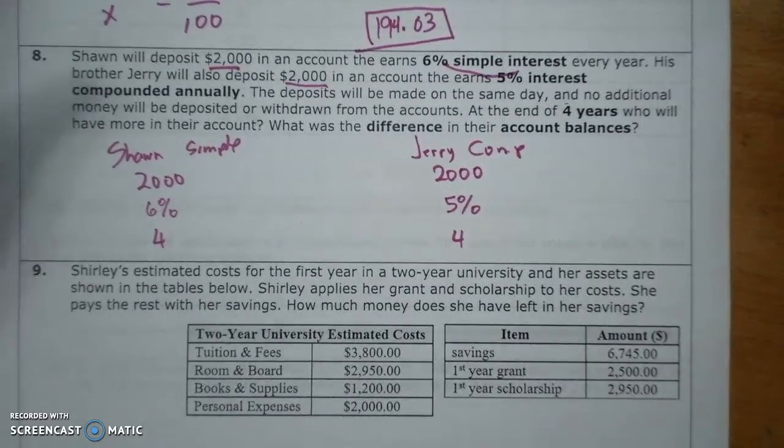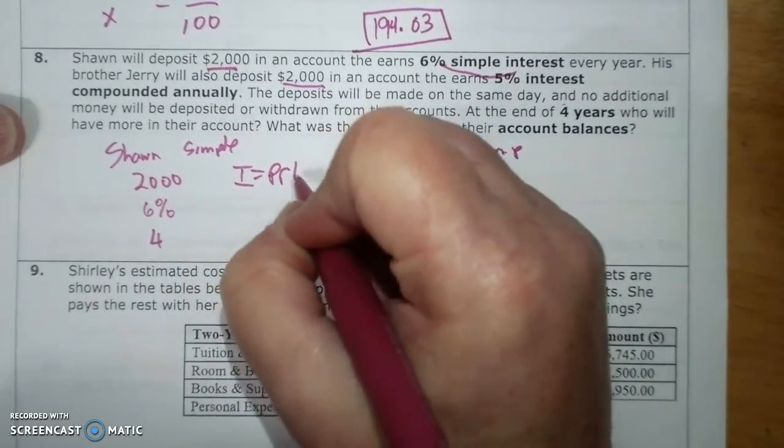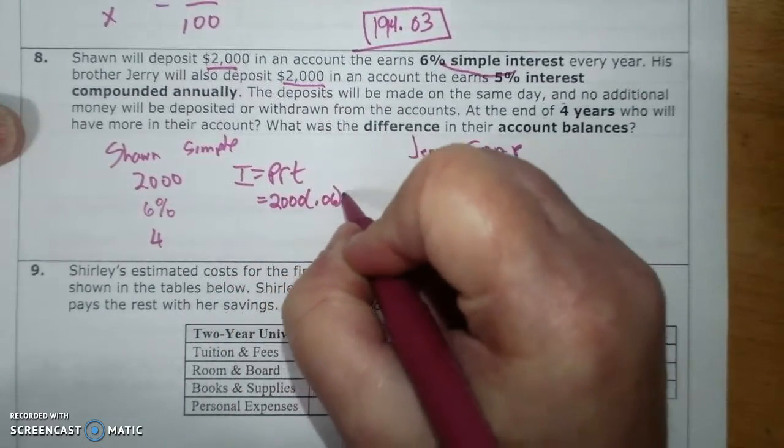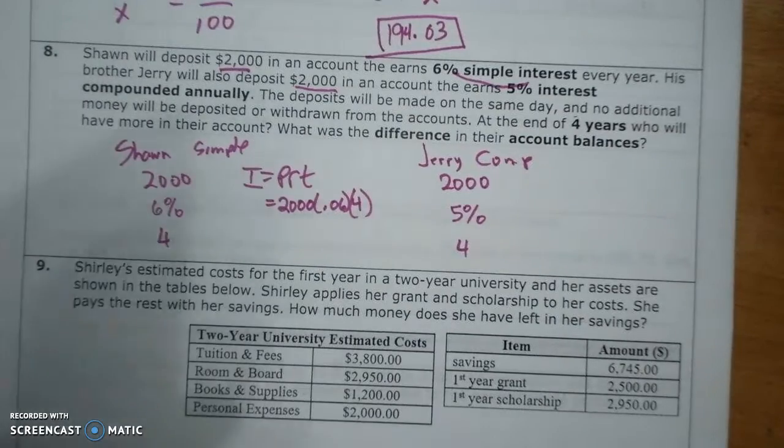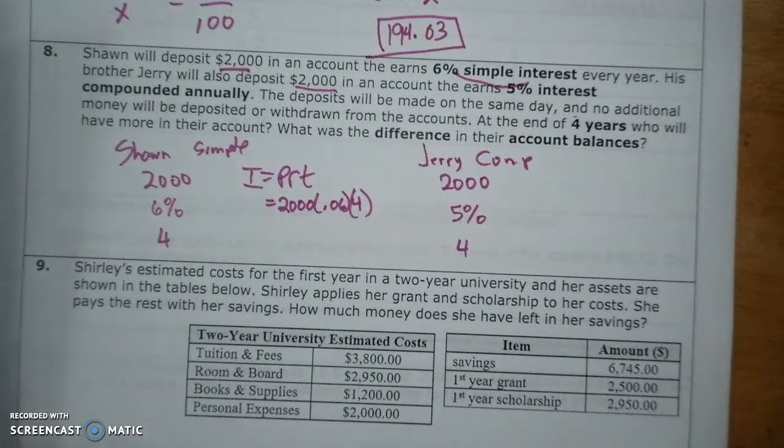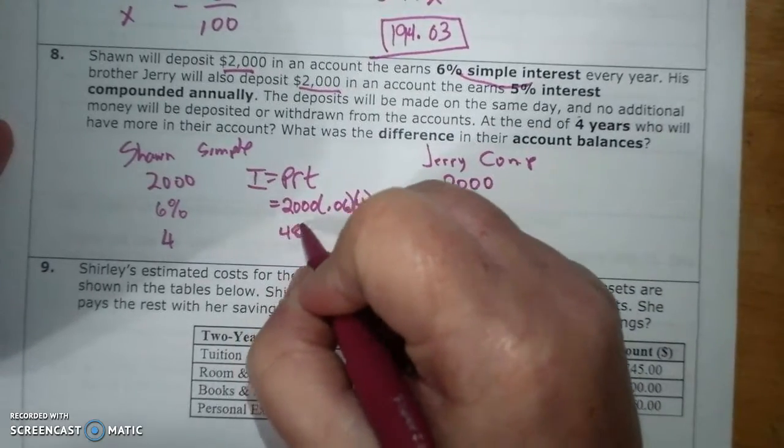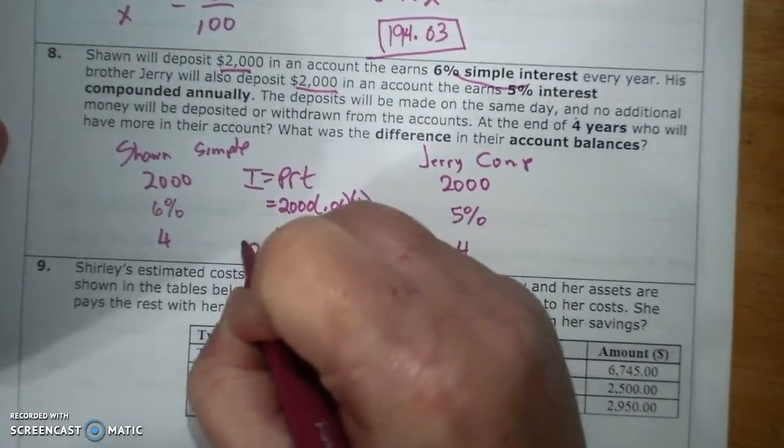Alright, so let's figure out Sean. I equals PRT equals $2,000 times 0.06 times 4 equals $480, so he has a total of $2,480 in his account. That's Sean.